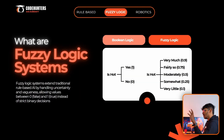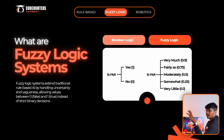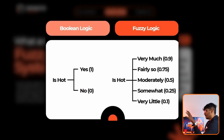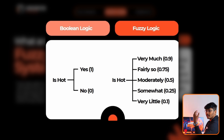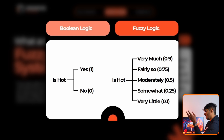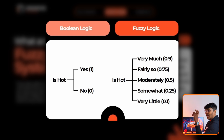Next is fuzzy logic systems. Fuzzy logic systems are very similar to rule-based systems, but the output is not a simple boolean — not just Yes or No, or 0s and 1s. Instead it gives probabilistic values like 0.1, 0.25, 0.5, 0.75, or 0.9. It introduces a little ambiguity.